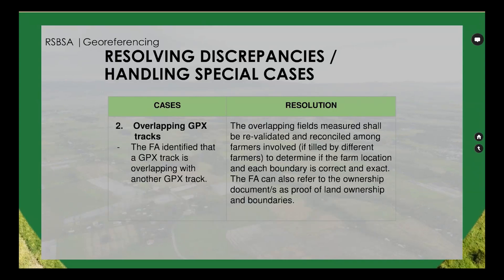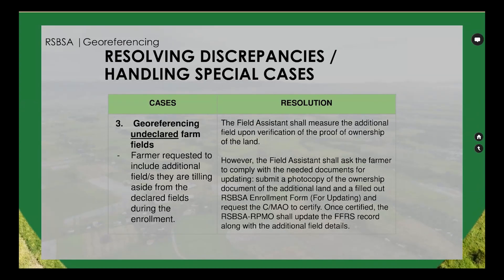Case 2 — overlapping GPX tracks: the FA identifies that a GPX track is overlapping with another GPX track. Resolution: the overlapping fields measured shall be revalidated and reconciled among the farmers involved — if tilled by different farmers — to determine if the farm location and each boundary is correct and exact. The FA can also refer to ownership documents as proof of land ownership and boundaries.